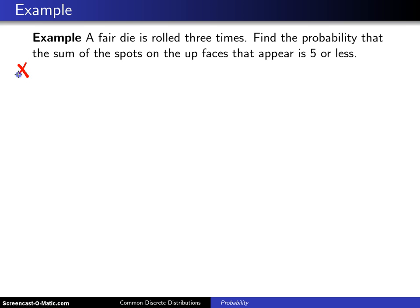In this case there are three random variables, and subscripts will be used to differentiate between the three of them. X sub i will denote the number of spots that appear on roll i.